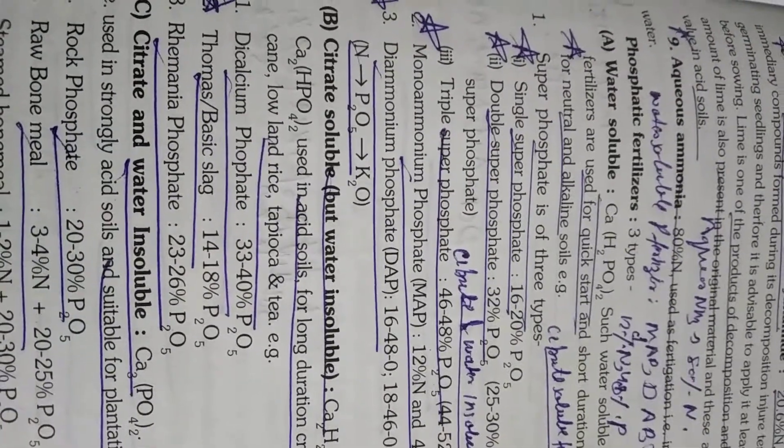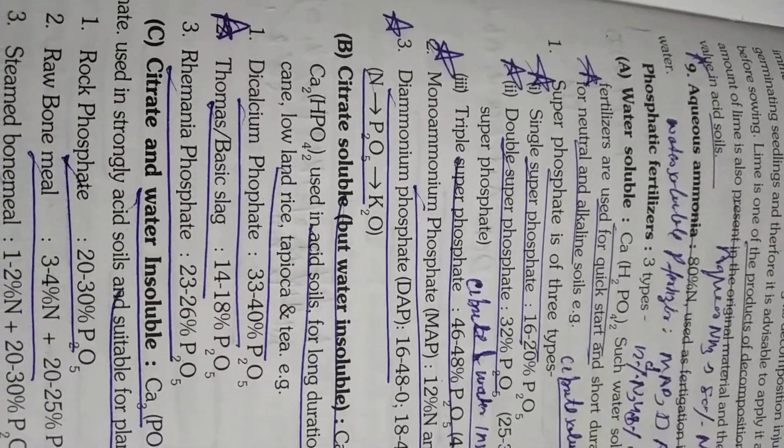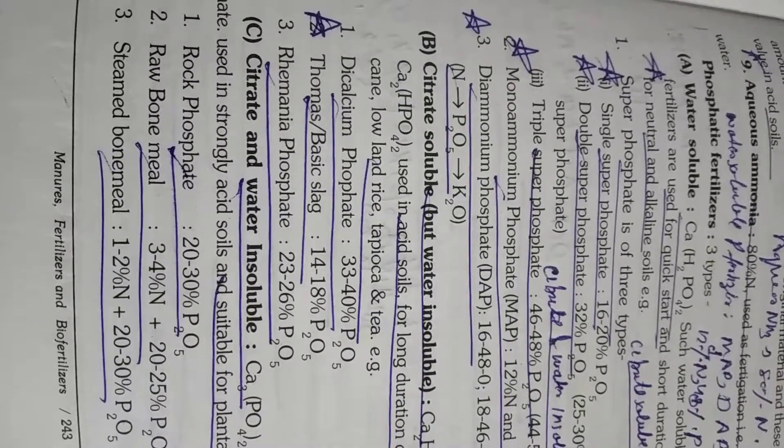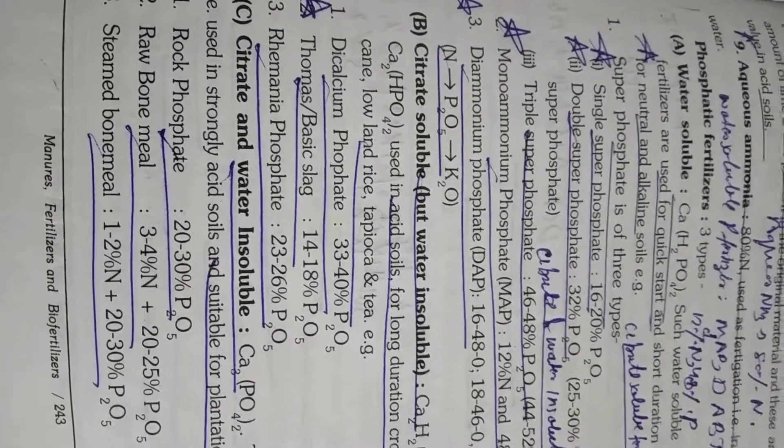Citrate soluble fertilizers are DCP, thomas slag or basic slag and rhenania phosphate. And citrate and water insoluble fertilizers are rock phosphate, raw bone meal, steamed bone meal. Please remember students.